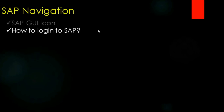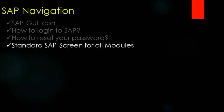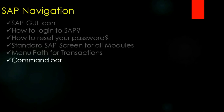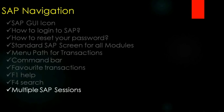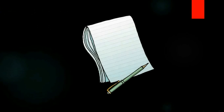So that's all about the navigation. Today we learned about the SAP GUI icon and how it looks, how to log in, how to reset a password, the standard SAP screen for all modules, menu path for transactions, the command bar where you can manually type transaction codes, how to create favorite transactions, F1 help, F4 search help, multiple SAP sessions, and how to display the technical name. Thank you for your time — we'll continue with the next video.